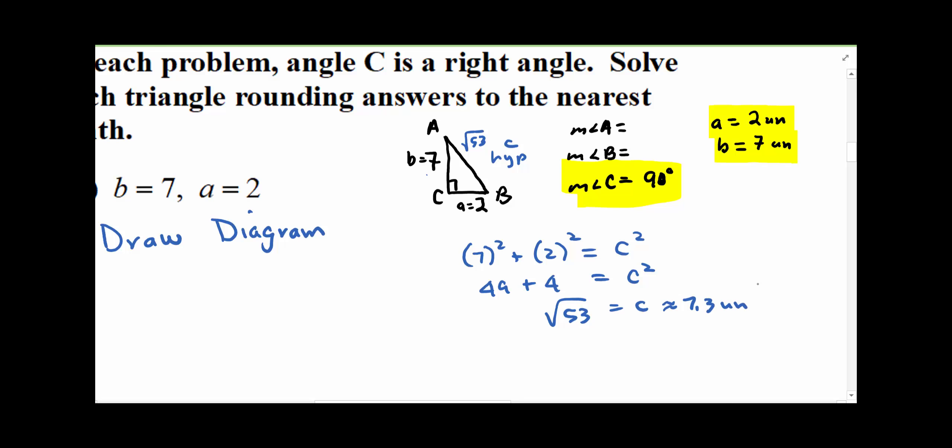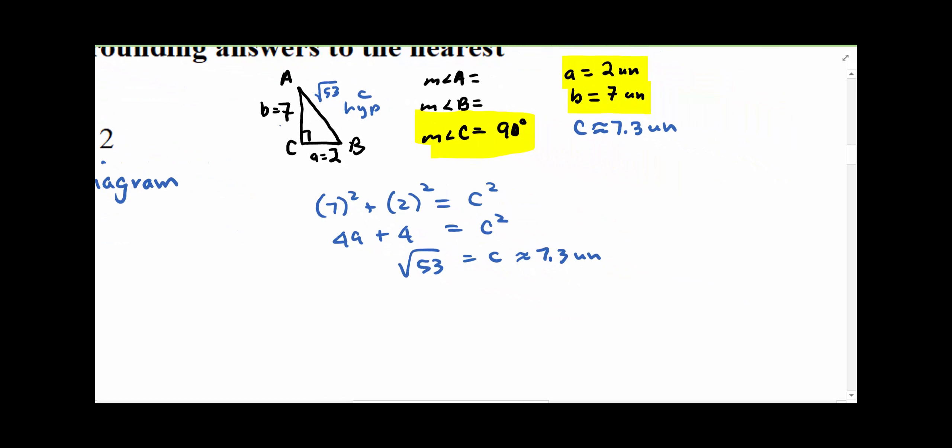So side C is about 7.3 units. All right, so now we just have to decide which angle we're going to try to solve...